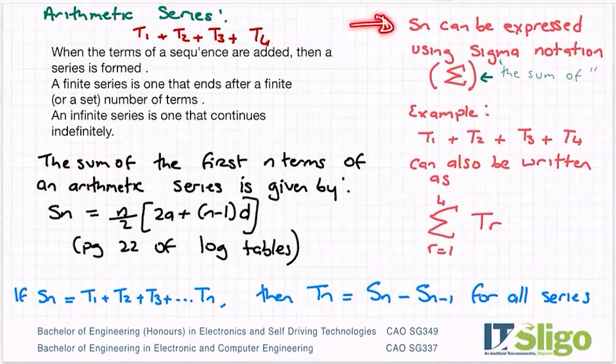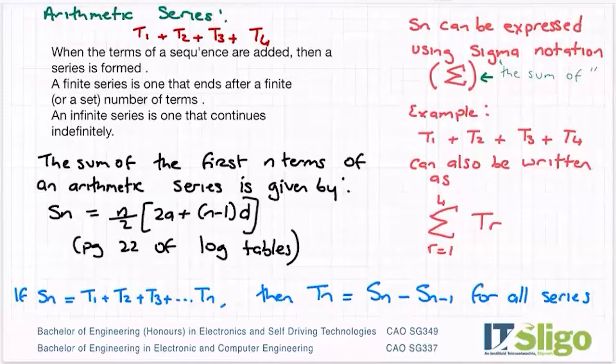Let's come up here then, because I want to introduce you to the sigma notation that is used with series in some questions. So that SN can be expressed using what's called sigma notation. So that symbol there is sigma and it means it's maths language for the sum of. So as an example, I just took our four terms T1, T2, T3, T4. How do I write that with sigma notation?